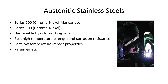Austenitic stainless steels: Series 200 is chrome-nickel-manganese; Series 300 is chrome-nickel. They are hardenable by cold working only. They have the best high-temperature strength and corrosion resistance, best low-temperature impact properties, and are paramagnetic. Hardenable by cold working only means — like the old Conan movies where they'd make a sword, get it red hot and quench it in water — you can't do that with austenitic stainless steels. There is no allotropic phase transformation from FCC to BCC. You heat it up red hot, it is face-centered cubic; you cool it down, it is face-centered cubic.